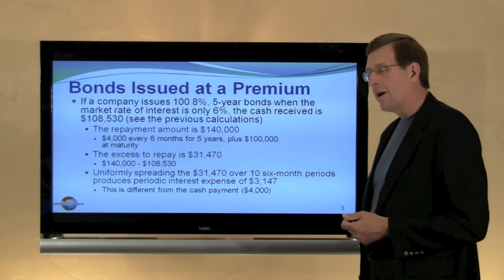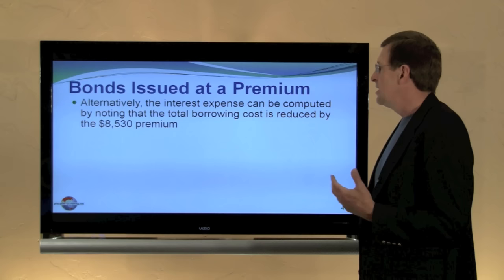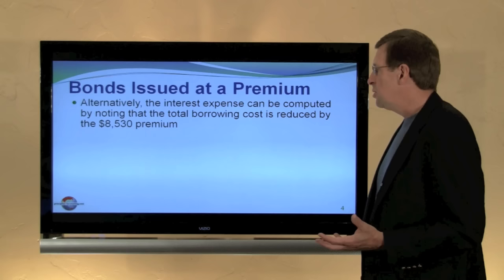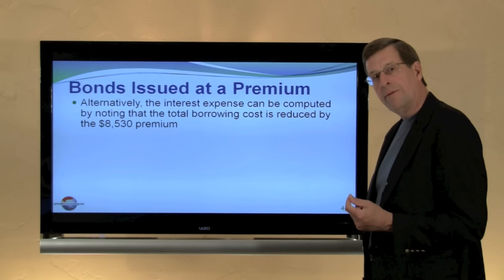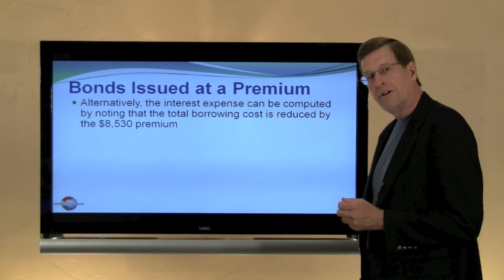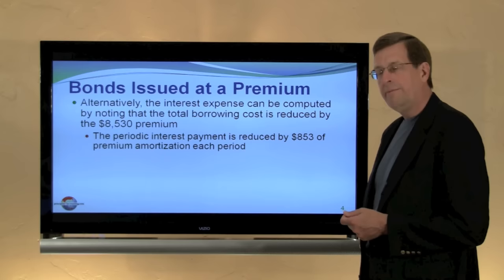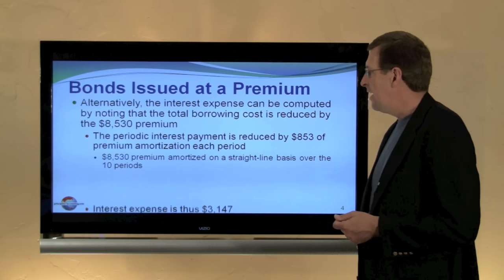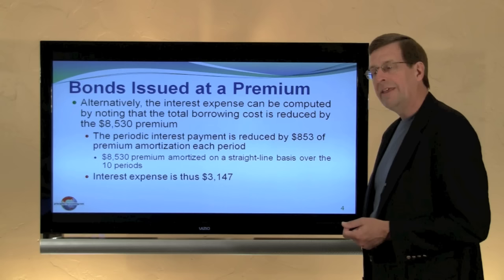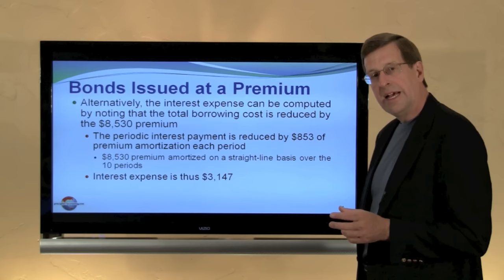That's different from the $4,000 cash payment we're going to make each period. Another way to consider this: the $40,000 of total interest payments is offset or reduced by the premium. We received $108,530 but only have to repay $100,000, so we get to keep the $8,530. Dividing $8,530 by ten periods gives $853 of premium amortized each period, and $4,000 minus $853 equals $3,147 interest expense each period.